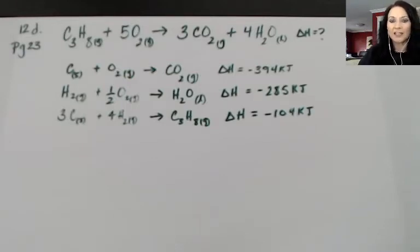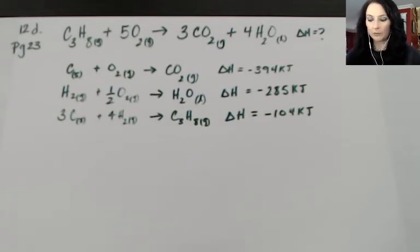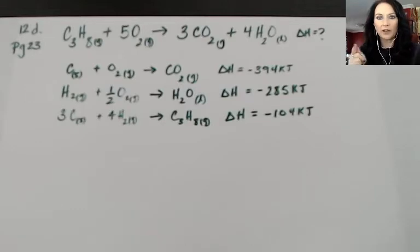Hess's law tells me that I can use other chemical reactions that I do know the delta H for. They can be manipulated because remember delta H is extensive. I can change the size of my delta H by changing the size of my reaction, multiplying or dividing all my coefficients from my chemical reaction will apply to the delta H.